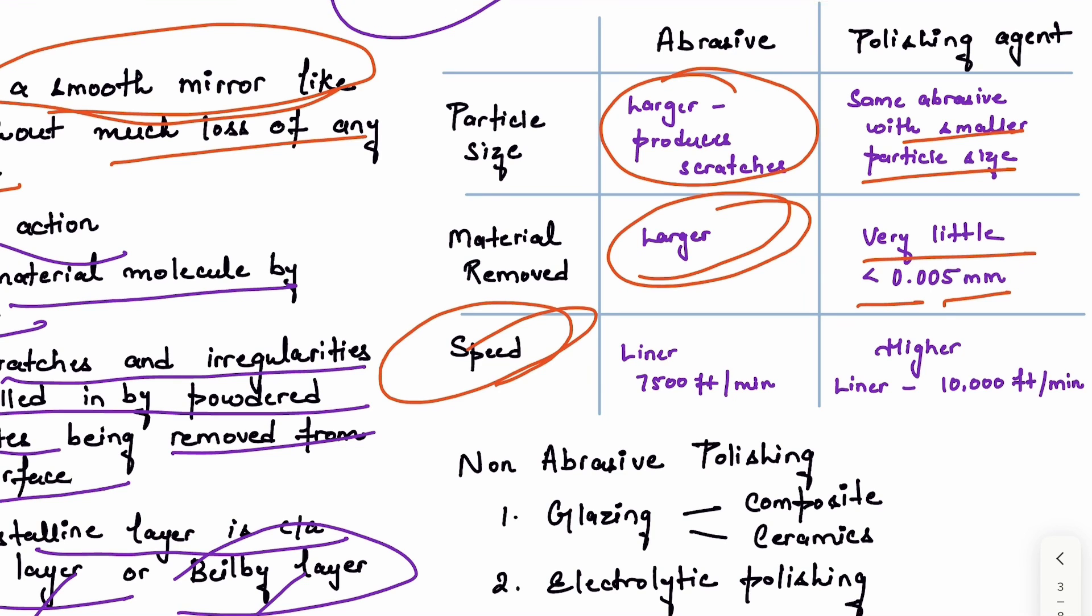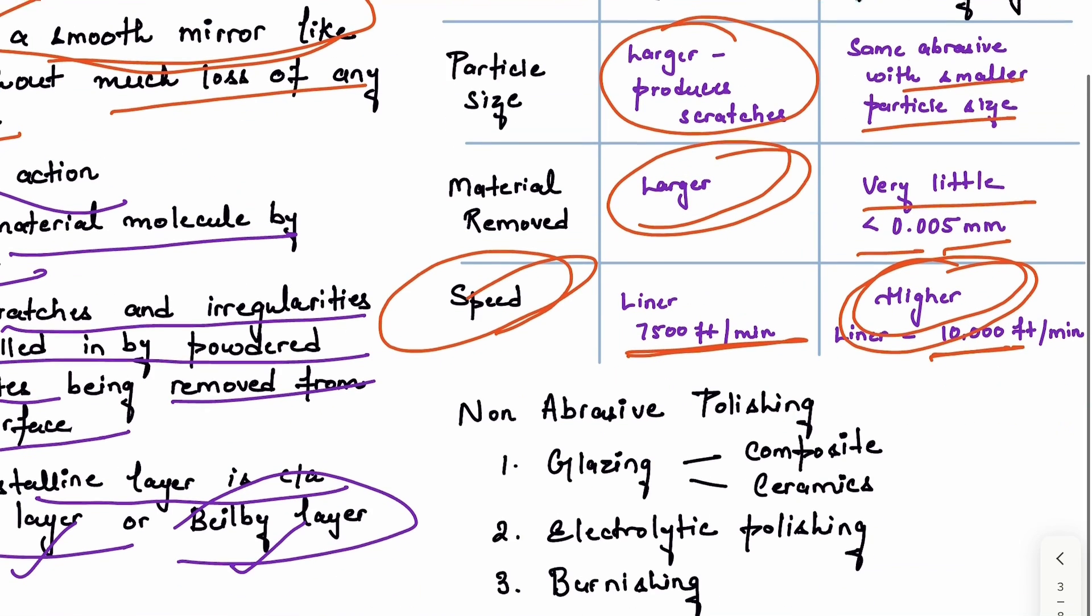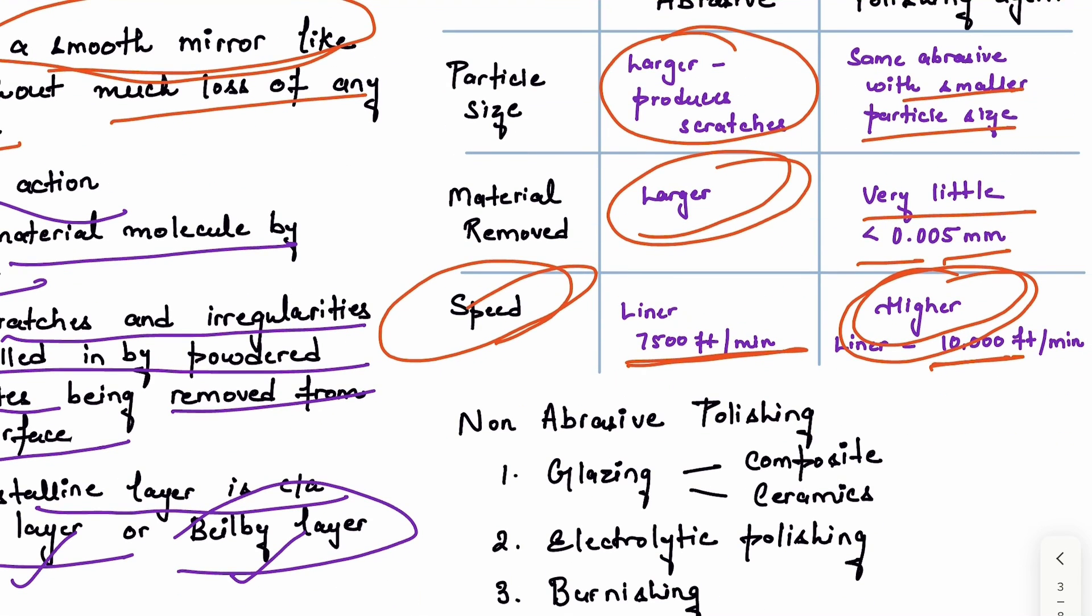Regarding speed - the linear speed of any instrument or bur we're using - it's higher in case of polishing agents. It has to be around 10,000 feet per minute for polishing and around 7,500 feet per minute for abrasion. We can also have non-abrasive polishing.